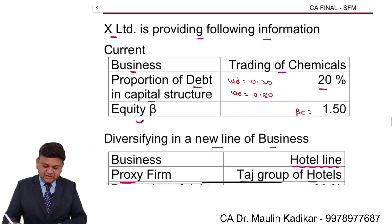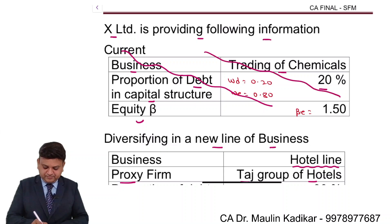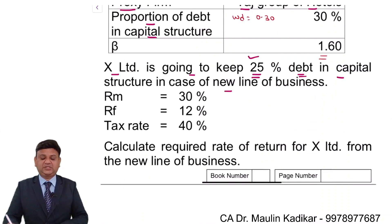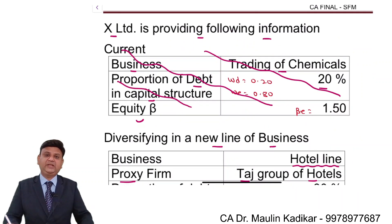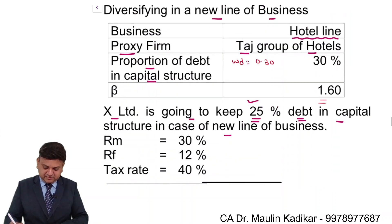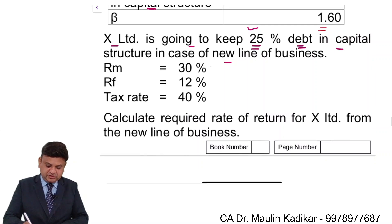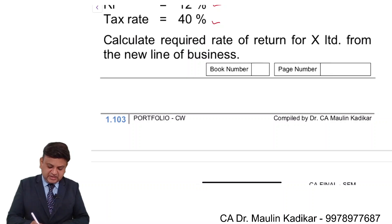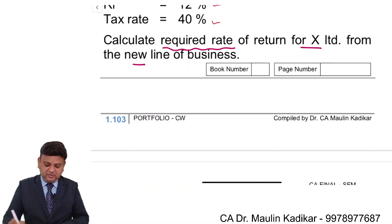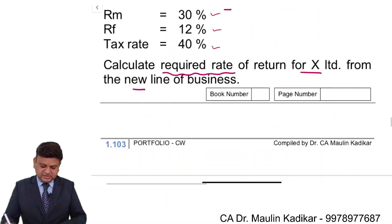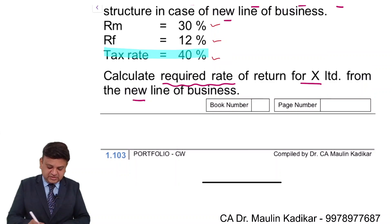We understand that the current information is of no use to us, because X Limited is going to have debt financing of 25% for financing the new capital structure. If we had not been given the new debt financing percentage, we could assume it continues with the existing capital structure — but here we do not need to make such an assumption. Return on the market portfolio is 30%, risk-free rate of return is 12%, and income tax rate is 40%. The question asks us to calculate the required rate of return for X Limited from the new line of business.